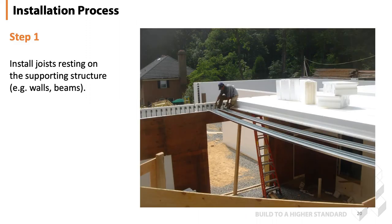Now we'll dive into the installation process. This is a short and basic guide to AMDEC installation — it may vary depending on your application, residential versus commercial, based on spans, site conditions, etc. Once the concrete is poured into the ICF wall and has gained appropriate strength, start by installing the wood or metal joists. Metal joists should be facing each other — this is applicable to AMDEC Pro only.